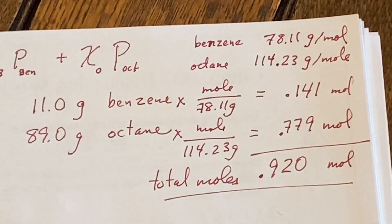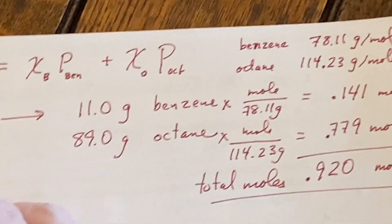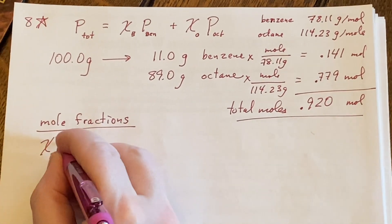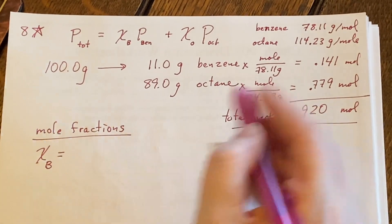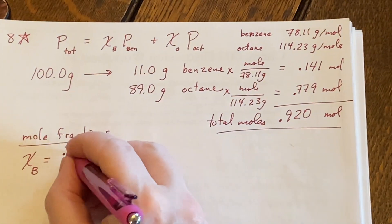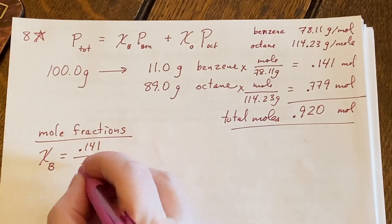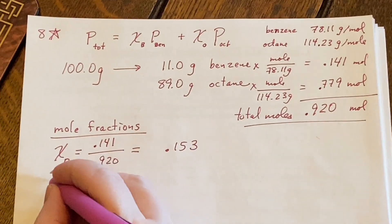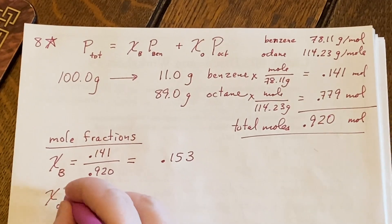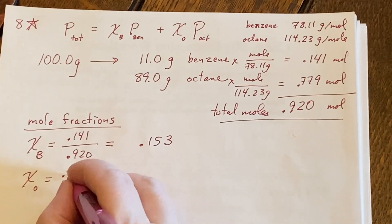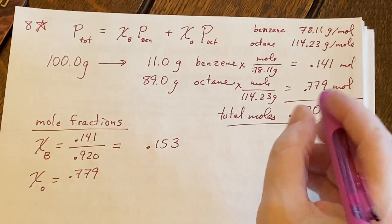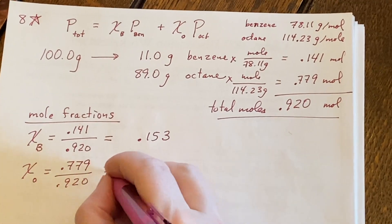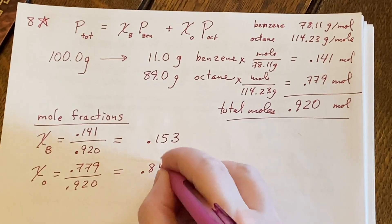That means the total number of moles is just adding these together, 0.920 for total moles. That means now I'm in a position to figure out what the mole fractions are. Chi for benzene is going to be the moles of benzene, which is the 0.141 over the total moles, 0.920, giving 0.153. The mole fraction for the octane is going to be the 0.779 moles for the octane over the 0.920, which gives me 0.847.